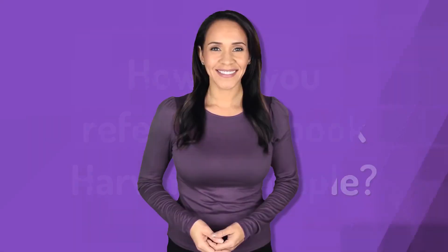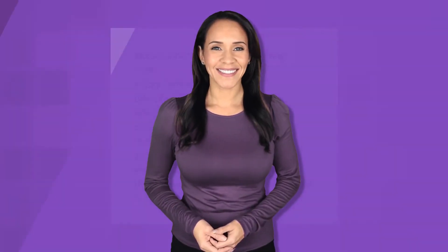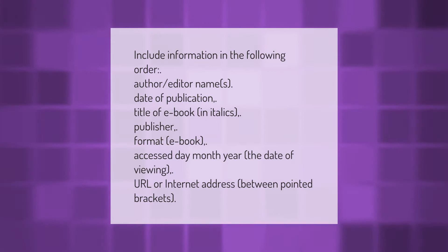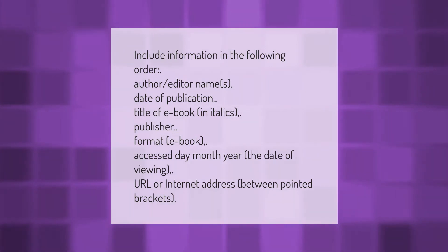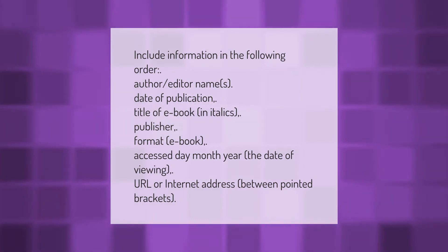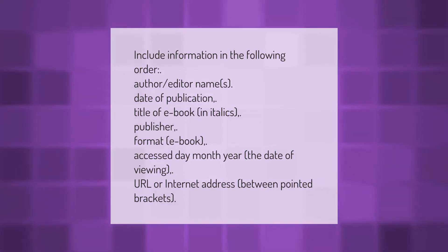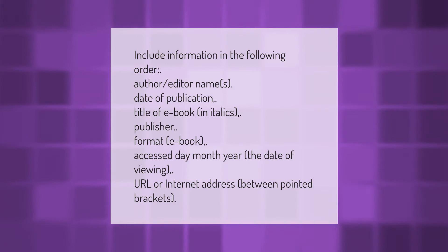For e-books, include information in the following order: author or editor names, date of publication, title of e-book in italics, publisher, format (e-book), accessed day month year (the date of viewing), and the URL or internet address between pointed brackets.